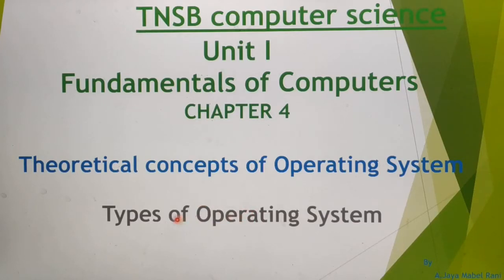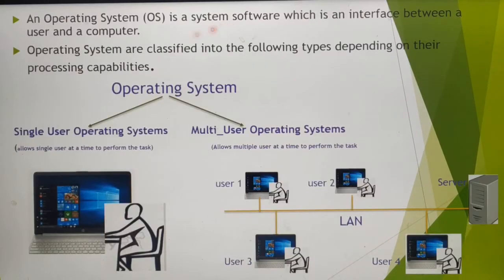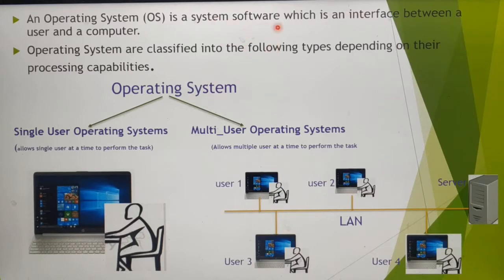Students, in this video we are going to see about types of operating system. First we can see what is an operating system. Actually, operating system is a system software. System software is used to control all computer hardware components, and it acts as an interface between the user and the computer.